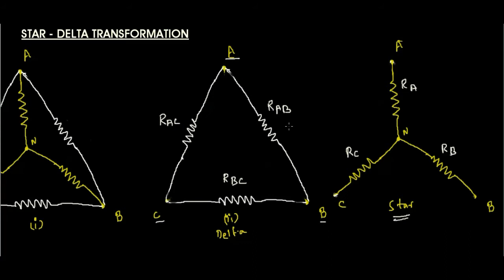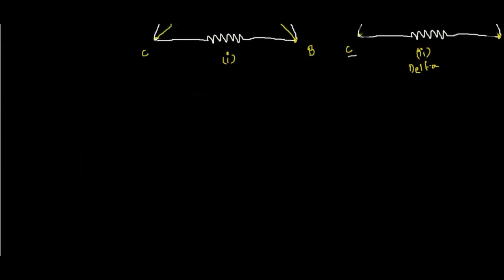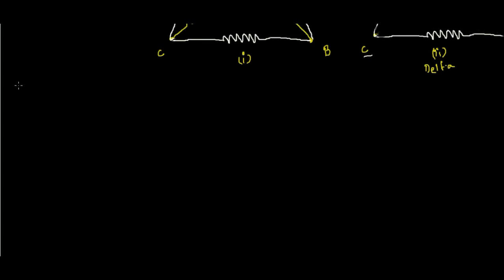Now we are going to see how to do the transformation between star and delta. We apply the basic rules studied in previous classes. We operate between the three nodes A, B, and C. If the star and delta connections are equivalent, the resistances between any two nodes must be equal. We will now do the derivation for the delta-to-star transformation.